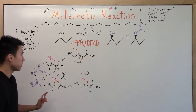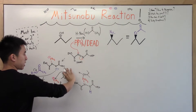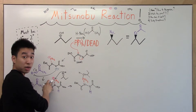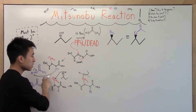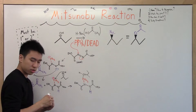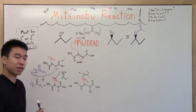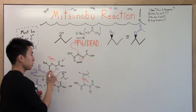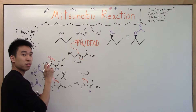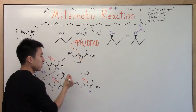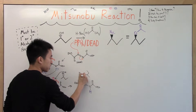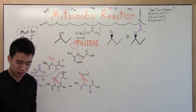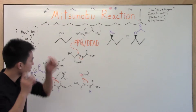Hopefully I haven't lost you. I just rotated the alcohol after it attached. Does it still have its positive charge — the phosphorus? No, it does not. Why? It got electrons from the oxygen. So the oxygen is positive.